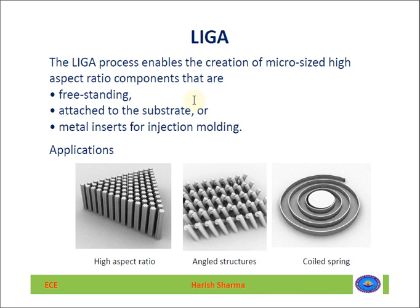The LIGA process enables the creation of micro-sized, high aspect ratio components. It can produce high aspect ratio, angled structures or coil springs that are not possible to fabricate using surface micro machining or bulk micro machining.